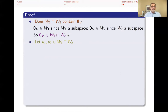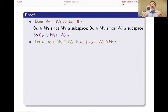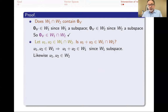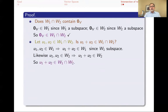Is W1 ∩ W2 closed under addition? Let's pick two arbitrary elements U1 and U2 in the intersection and see if their sum is in the intersection. U1 and U2 are in the intersection, so in particular they're in W1. But W1 is a subspace, so it's closed under addition, and therefore U1 + U2 must be in W1. Likewise, U1 and U2 are also in W2, and since W2 is a subspace their sum must be in W2 as well. Since U1 + U2 is in both W1 and W2, it's in the intersection. We took two arbitrary elements and showed their sum is in W1 ∩ W2, so it is closed under addition.